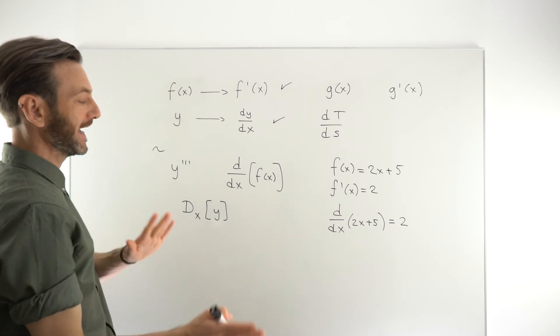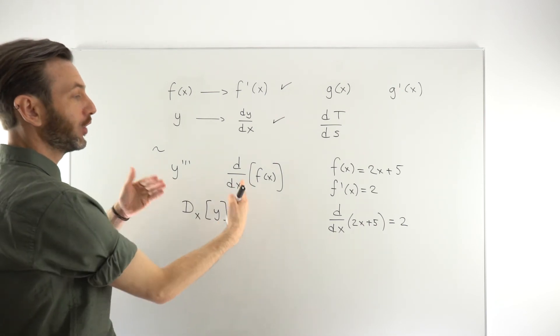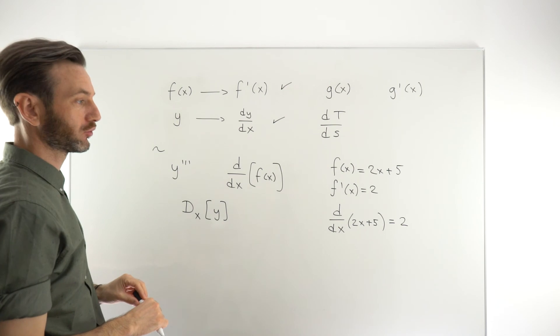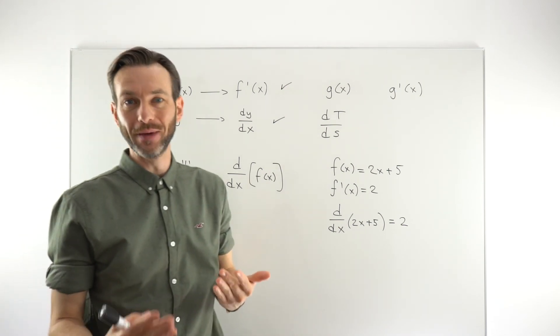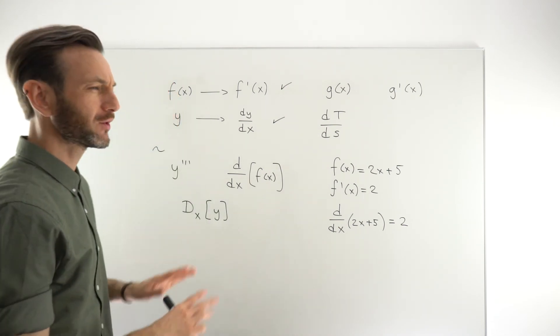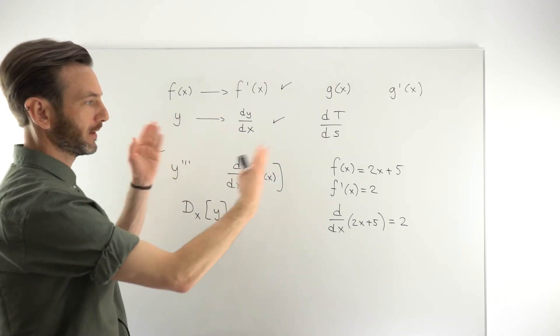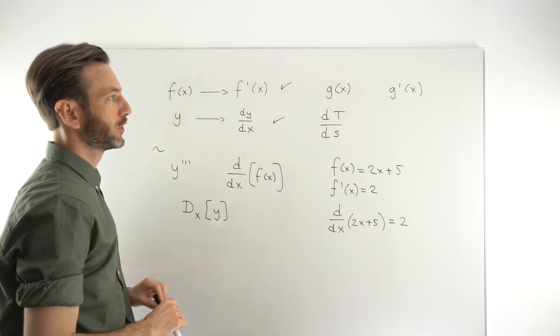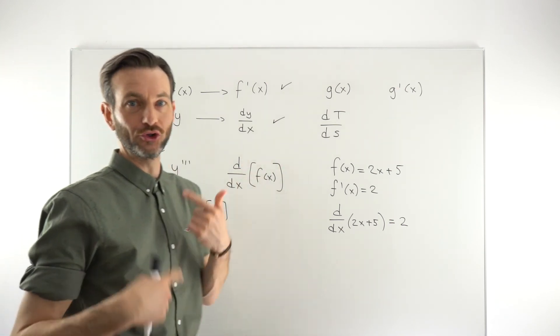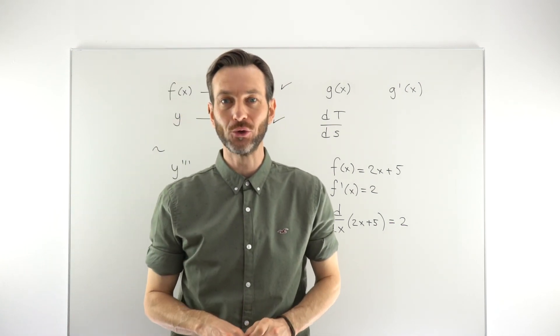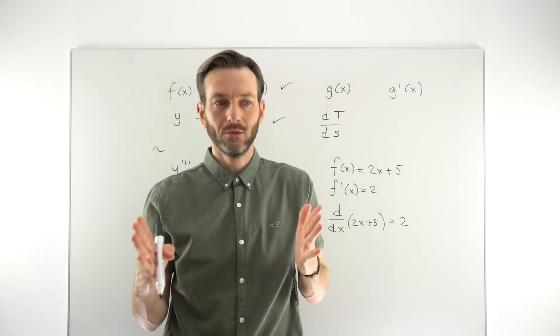And as you actually get into using these, if you've got a need to use them for a particular topic, then you'll be looking at them in that topic anyway. So this is kind of just prep work. This is just a bit of an overview of the notation just to help you take those first steps into differential calculus without thinking, what's going on here? Like, what does all this weird symbolism mean?